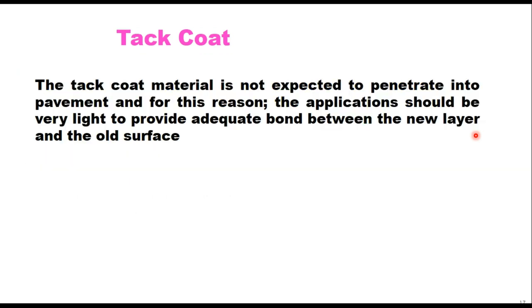The tack coat material is not expected to penetrate into the pavement, and for this reason the application should be very light to provide adequate bond between the new layer and the old surface. The purpose of tack coat is to have a good bond between the new layer and the old surface. If this bond is not sufficient, it may cause slipping of the top surface.